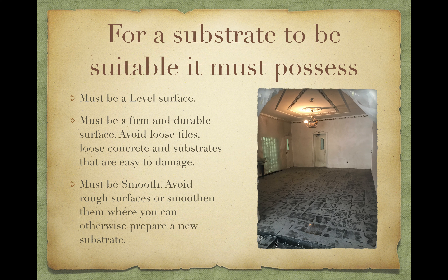Here is an example of an incompatible surface substrate that has been ground or shot blasted already. You'll notice that it was formerly a tile surface — black tiles — but it's been ground and shot blasted to make it suitable. Now for a substrate to be suitable, it must possess certain qualities.